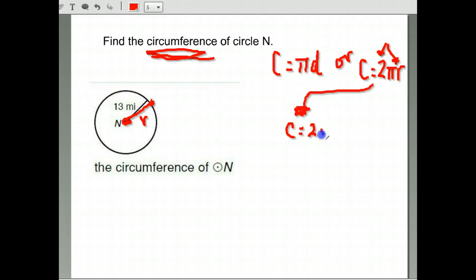So circumference is 2 times pi times my radius. That's 2 times pi times 13. We just go ahead and multiply that. Again, use the pi button on your calculator.